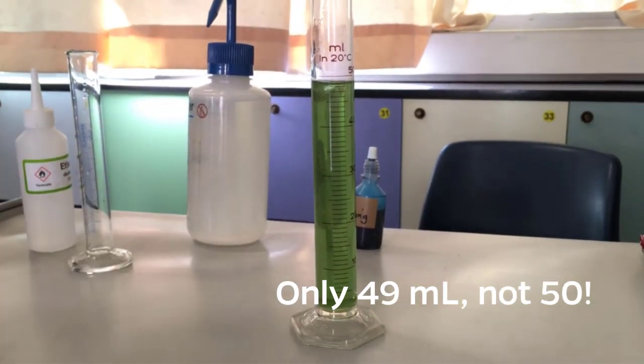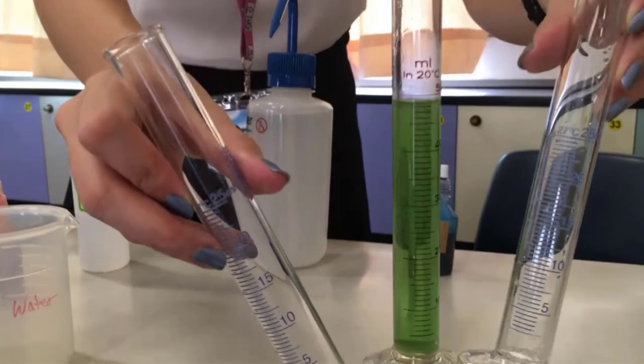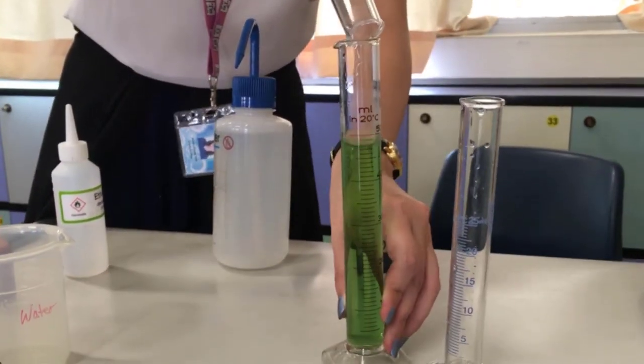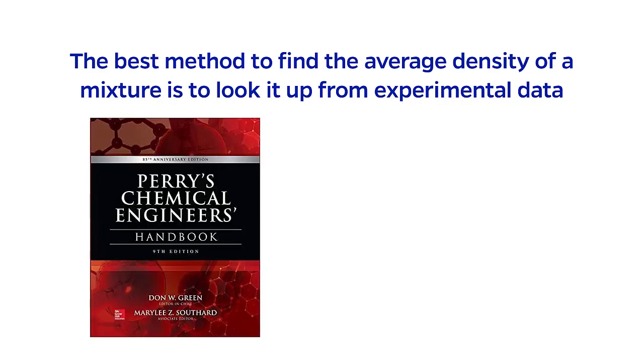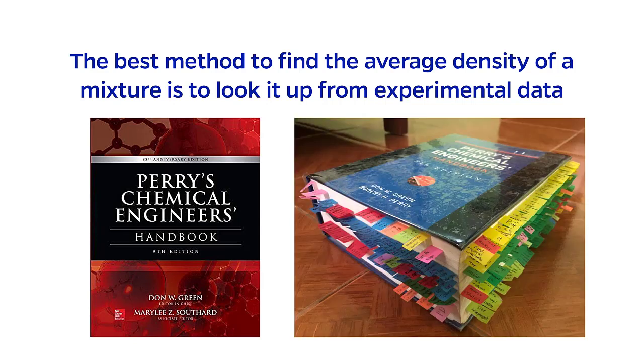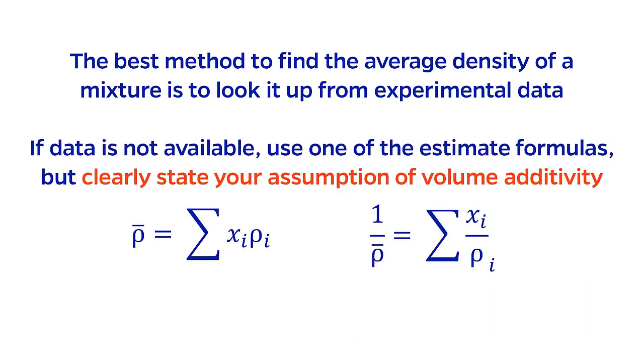This concept is called delta V mixing, and it will be a subject covered in a later course in thermodynamics or phase equilibria. So the best thing to do when you need to calculate the average density of a mixture is to simply look it up from actual data. In chemical engineering, one of the best data sources is called Perry's Chemical Engineers Handbook. Now the term handbook is kind of humorous here because Perry's is a mammoth of a tome. I wouldn't recommend carrying it around anywhere unless you want a full workout. But you might be able to find an online version on the library website. If Perry's doesn't have the density of the mixture that you want, and you can't find it elsewhere,